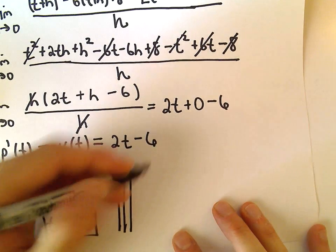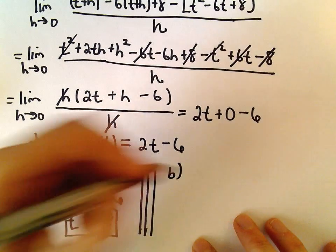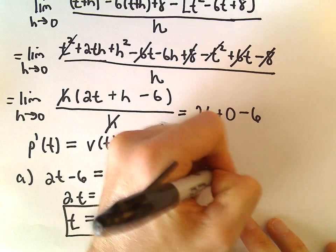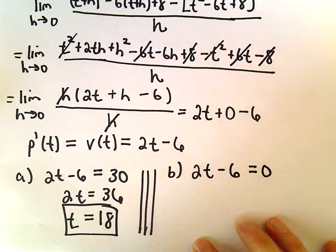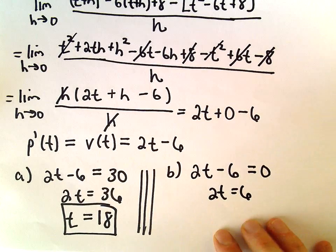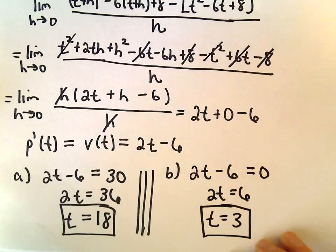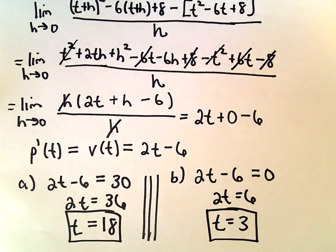For part b, if we want to figure out when the particle is at rest, well, the particle is going to be at rest when the velocity equals 0, so we can just add 6, divide both sides by 2, and we'll get t equals 3. So after 3 seconds, that's when our particle would be at rest.